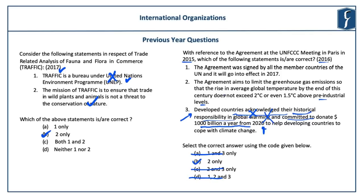Statement 1 is also incorrect as the agreement was supposed to go into effect from 2020 and not in 2017. Statement 2 is true as one of the main focuses of the agreement is to hold the increase in global average temperatures to well below two degrees Celsius above pre-industrial levels, and driving efforts to limit it to within 1.5 degrees Celsius. It covers all crucial areas including mitigation, adaptation, loss and damage, finance, technology transfer and development, capacity building, and actions to contain global warming.